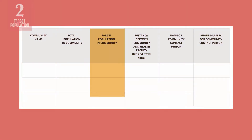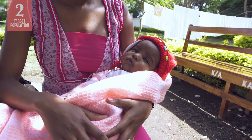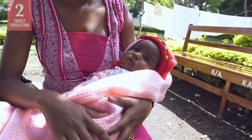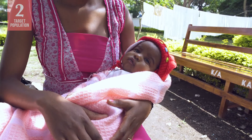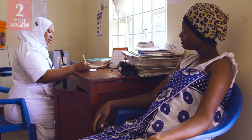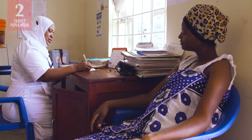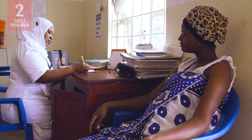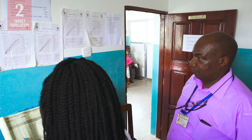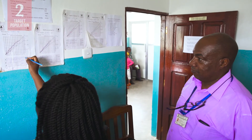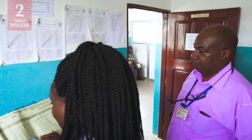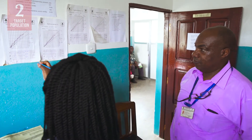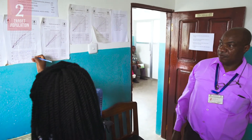The target population of each community is the number of infants under one year of age and pregnant women whom you are trying to reach with immunizations. You will need this information to know when you have reached your coverage targets and to determine the amount of vaccines and supplies needed.